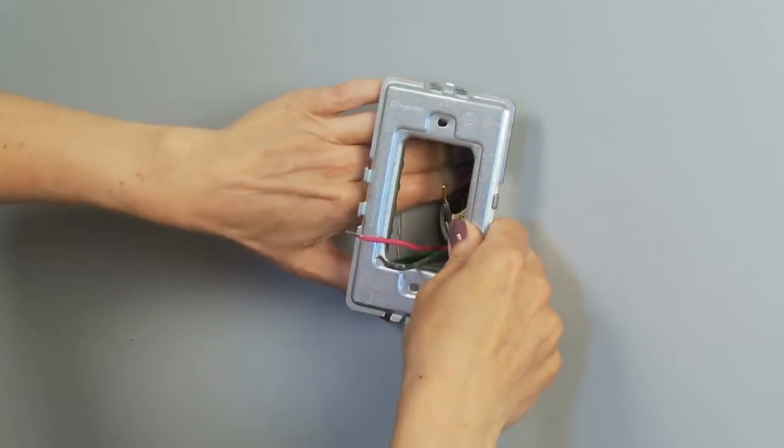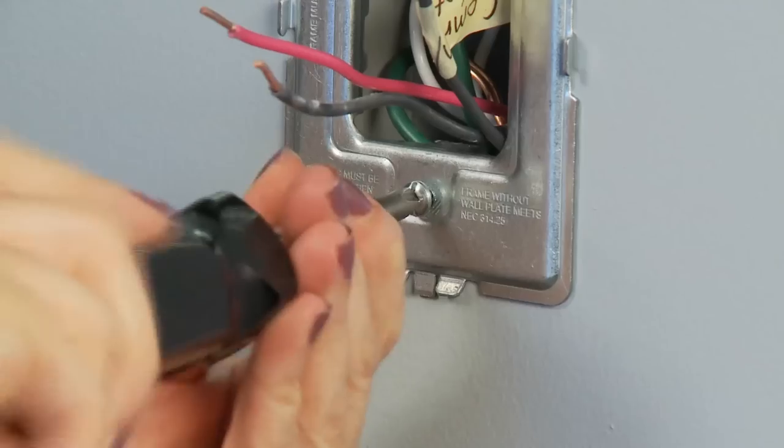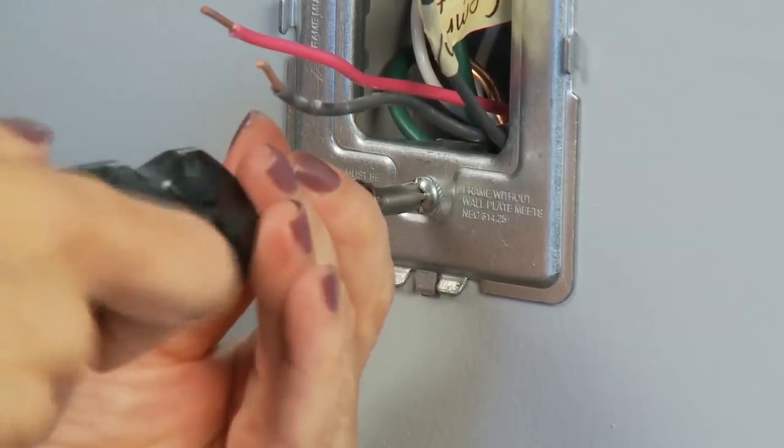Mount the frame to the wall box using the screws provided, taking care not to scratch or mar the surface of your wall. Tighten the screws tight enough to hold the frame onto the wall, but do not over tighten.